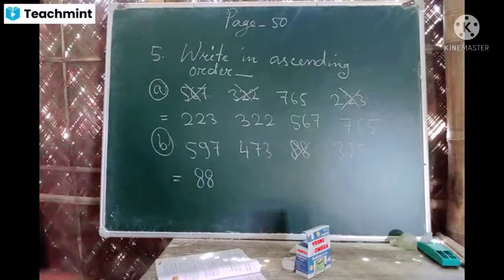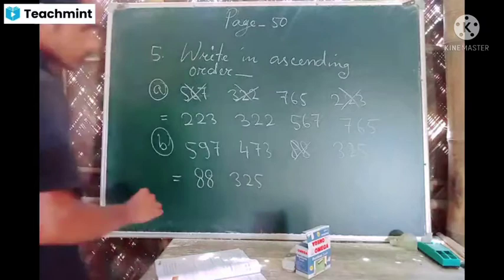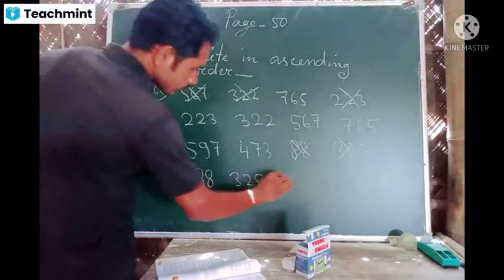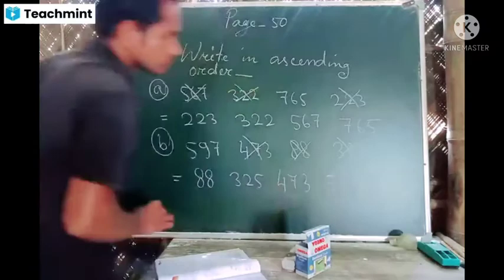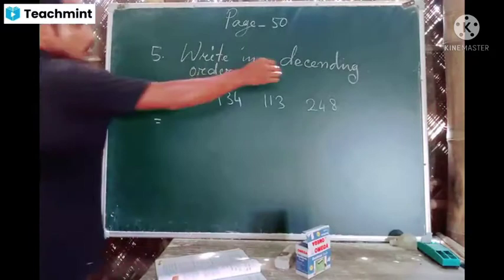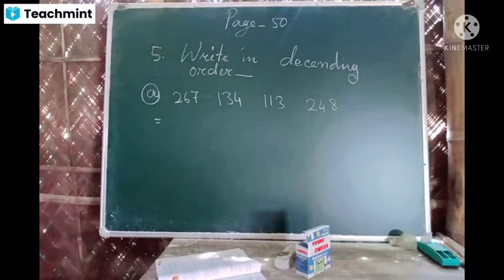325, yes, 325. 473, 497, very good. Writing descending order. Descending order means big number to small number.